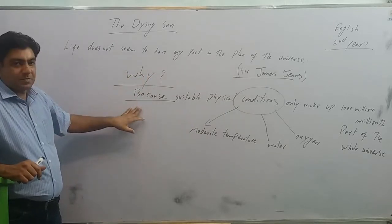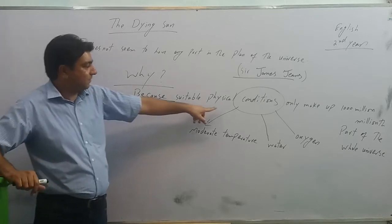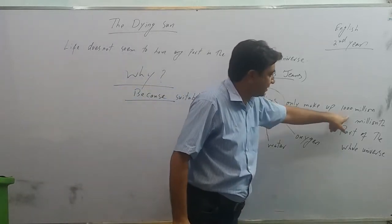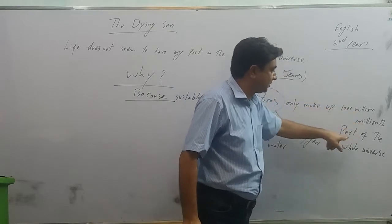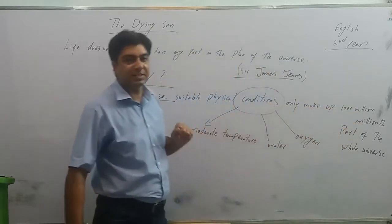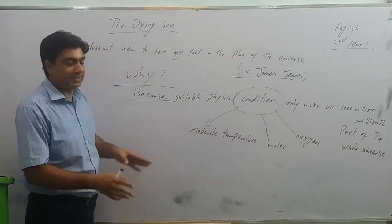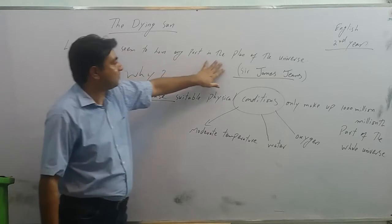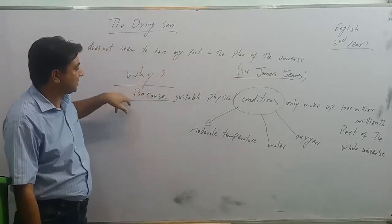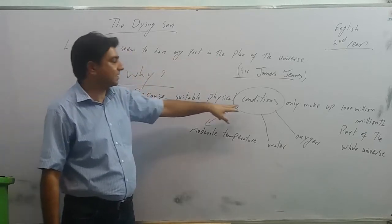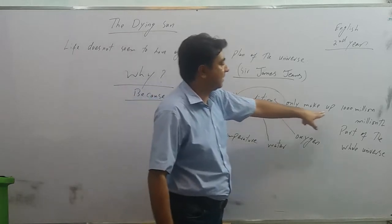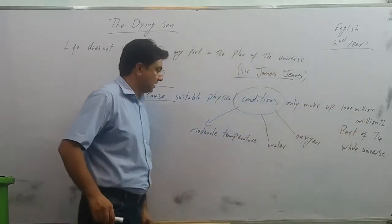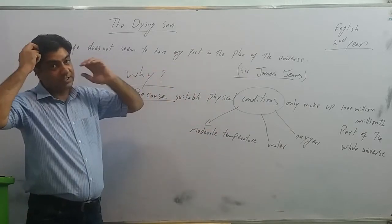Because he says suitable physical conditions only make up hundred million millionth part of the whole universe. Sir James Jeans gives the reason that why life doesn't seem to have any part in the plan of the universe. What are suitable physical conditions?